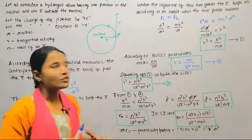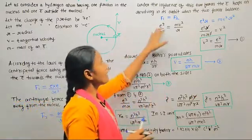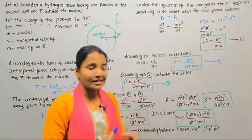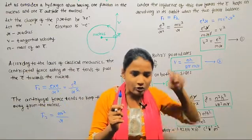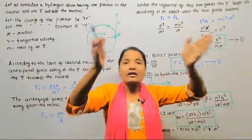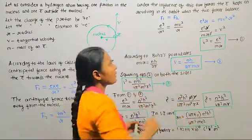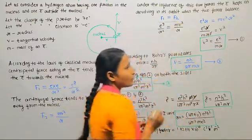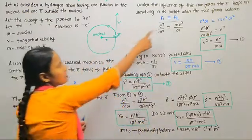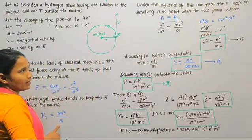Under the influence of these two forces, the electron keeps revolving in its orbit when the two forces balance. One force pulls the electron towards the nucleus, and the other force keeps the electron away. So for balance, F1 is equal to F2. F1 is equal to e square divided by R square, and F2 is equal to mv square divided by R.